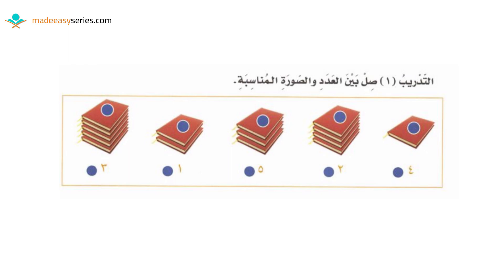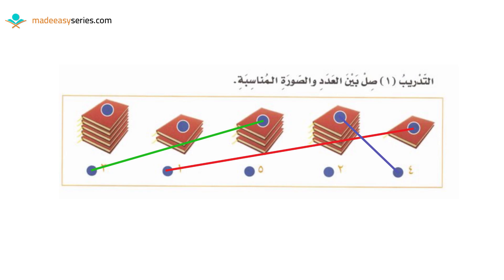Now let's go over the answers. Connect the first picture — one book — to واحد. The second picture — four books — to أربعة. The third picture — three books — to ثلاثة. The fourth picture — two books — to اثنان. And the last picture — five books — to خمسة.